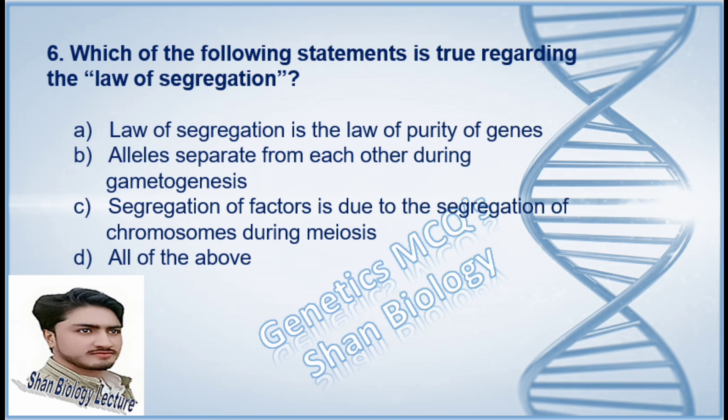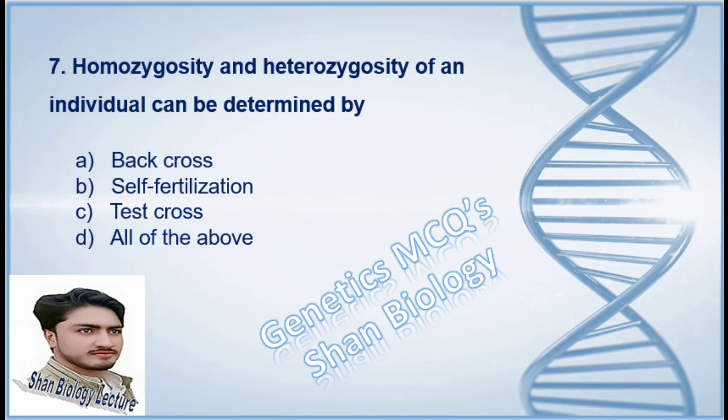Question 6: Which of the following statements is true regarding the law of segregation? Option A law of segregation is the law of purity of genes, option B alleles separate from each other during gametogenesis, option C segregation of factors is due to the segregation of chromosomes during meiosis, option D all of these. The correct option is D, all of these.